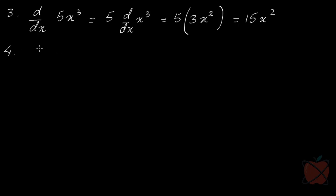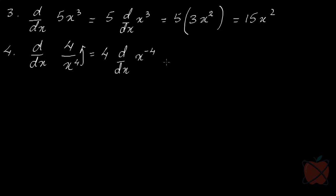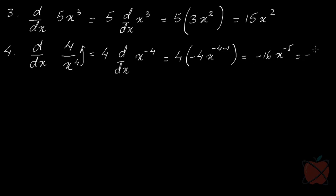Let's say d/dx of 4/x⁴. The 4 is a constant, so take it outside. We rewrite 1/x⁴ as x^(-4), then apply theorem 4: the -4 comes in front, and the power of x reduces by 1 to become -4 - 1 = -5. So you get 4 · (-4) · x^(-5) = -16x^(-5), which is -16/x⁵.